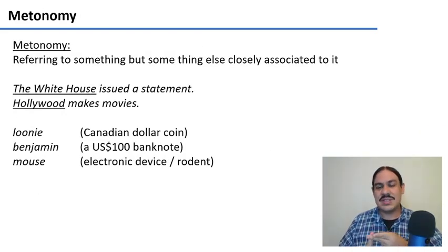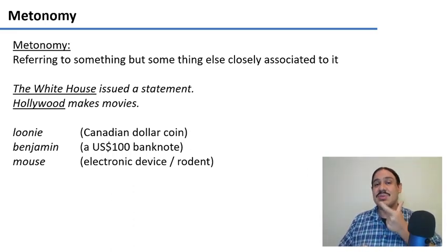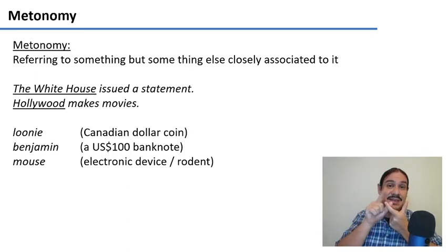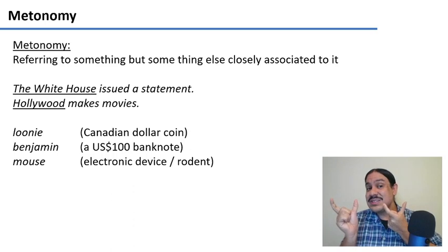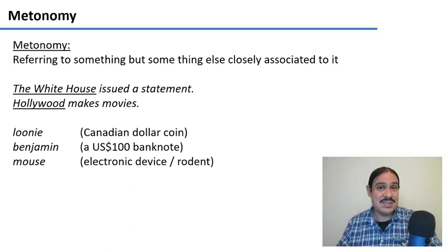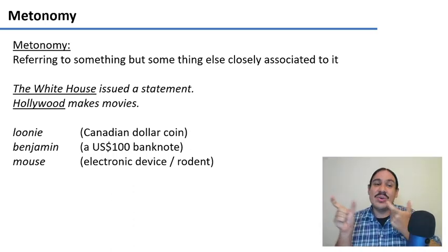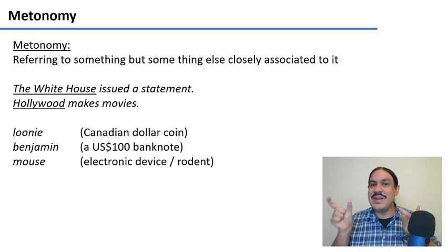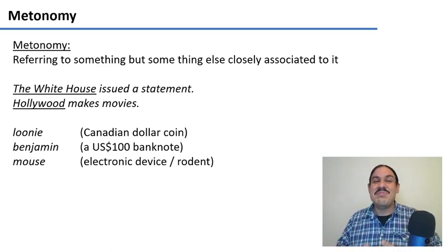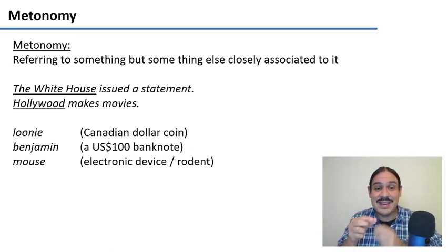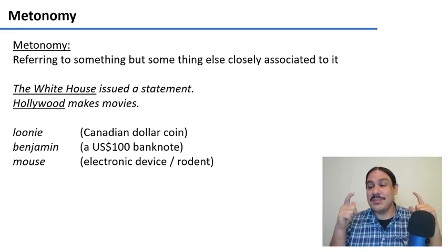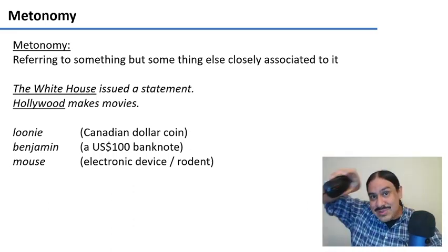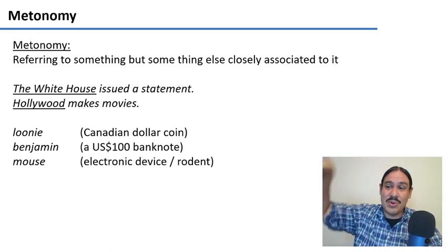So we have generalization, specialization, amelioration, and pejoration. Let's look at metonymy. Metonymy means associating the meaning of a word with something else that is closely related. For example, if you say 'the White House issued a statement,' it's not the building — it's the government, which is associated with the White House. When you say 'Hollywood makes movies,' it's not the zip code that makes the movies, it's the people who work there. Many words have changed due to metonymy — for example, a 'loony' and a 'Benjamin' are ways of calling coins and banknotes. A 'mouse' is called so because of its physical resemblance to the rodent.